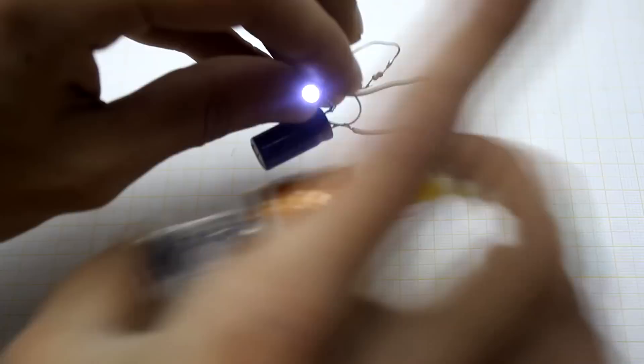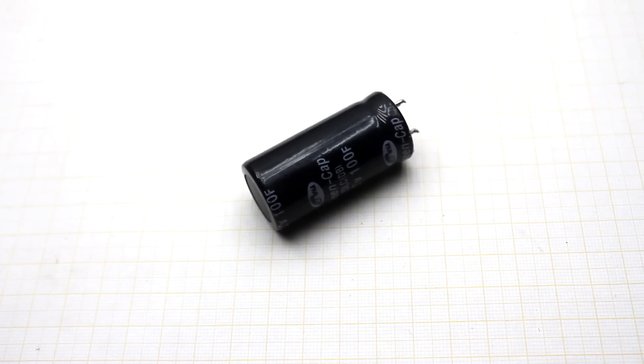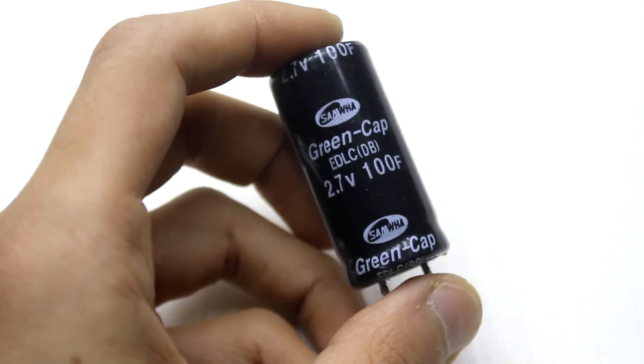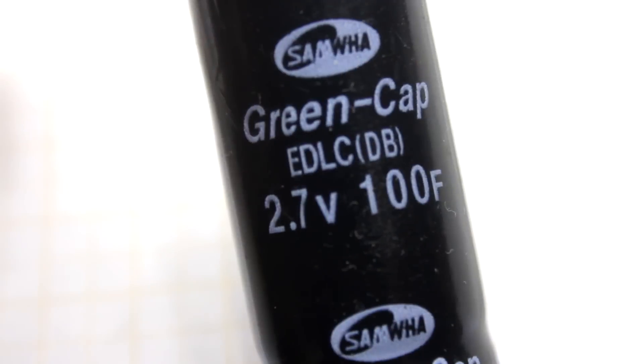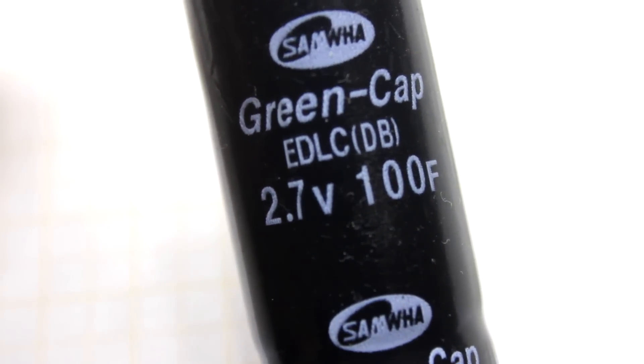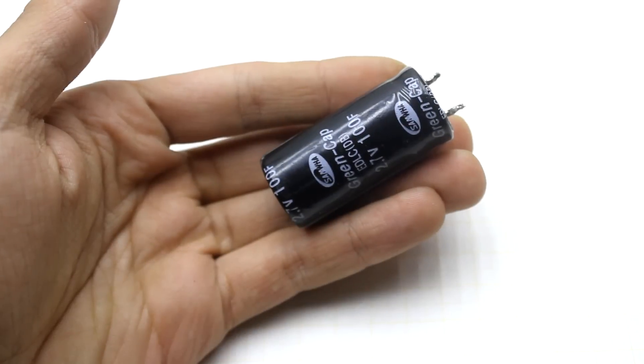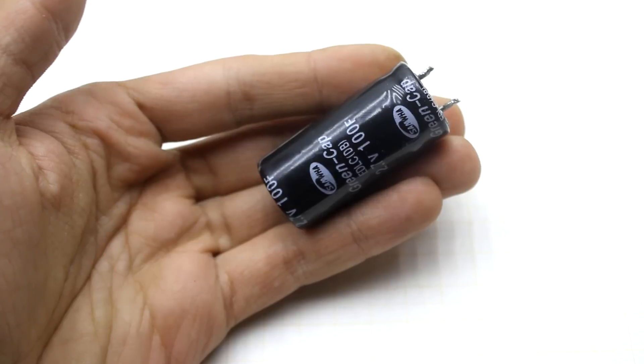Often, an ionister or supercapacitor is used as a backup source. Ionisters are something in between the battery and the capacitor. In contrast to the capacitors, their capacitance can reach hundreds or even thousands of Farads, but they have fairly compact dimensions.